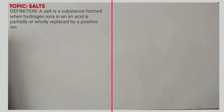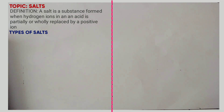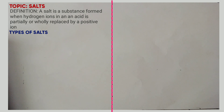We have four types of salts: normal salts, acid salts, basic salts, and double salts. We will look at how to define these salts and give examples.